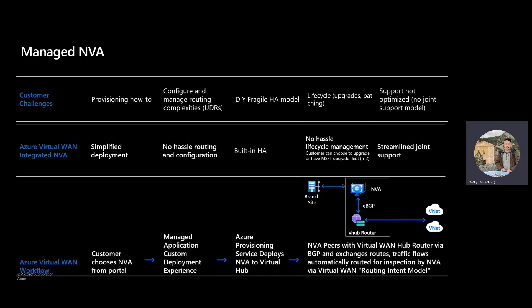We'll talk more about each of these five north stars later in this presentation, but I wanted to give a high-level overview of how the program actually works. The customer starts by choosing an NVA from the Azure portal, which links them to a managed application — a custom deployment experience that the partner writes. This managed application calls the Azure provisioning service to deploy the NVAs into the virtual WAN hub. The NVA is configured, it peers with virtual WAN to exchange routes via BGP, traffic flows happen automatically, and all routing is taken care of by the Azure platform.